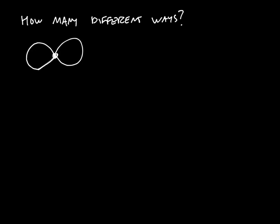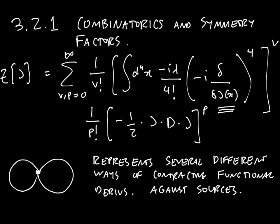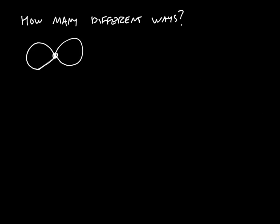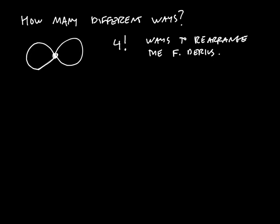This diagram has one vertex, and at each vertex there are four functional derivatives coming out. Therefore, if there's one vertex, there are four factorial ways to rearrange the functional derivatives coming out from the vertex. If we have V vertices, there are four factorial to the V different ways to do that. If there are P propagators, there are P factorial ways to rearrange the propagators amongst themselves.